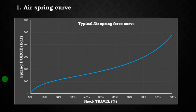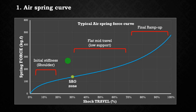This is a typical air spring force curve — most of you have probably seen something similar. This curve shows the force needed to compress the shock against the shock travel. It has basically three shapes: the first part has a shoulder which contributes to the initial stiffness of an air shock, then a pretty flat mid-travel with low mid-travel support, and finally the characteristic ramp-up at the end. These are the three phases of an air spring curve.